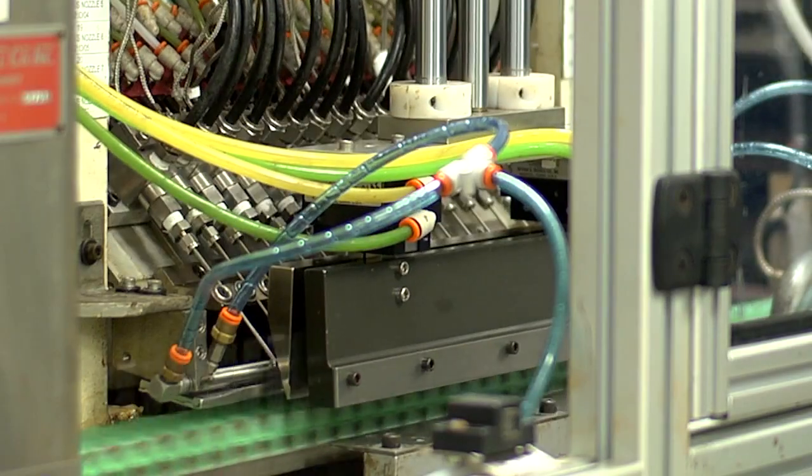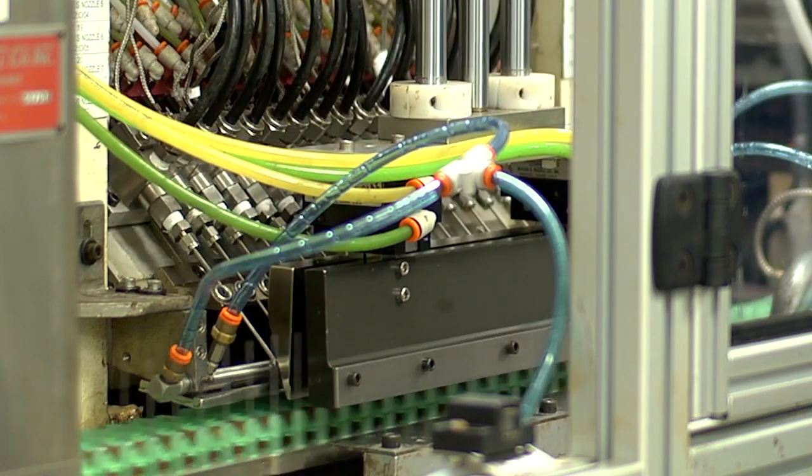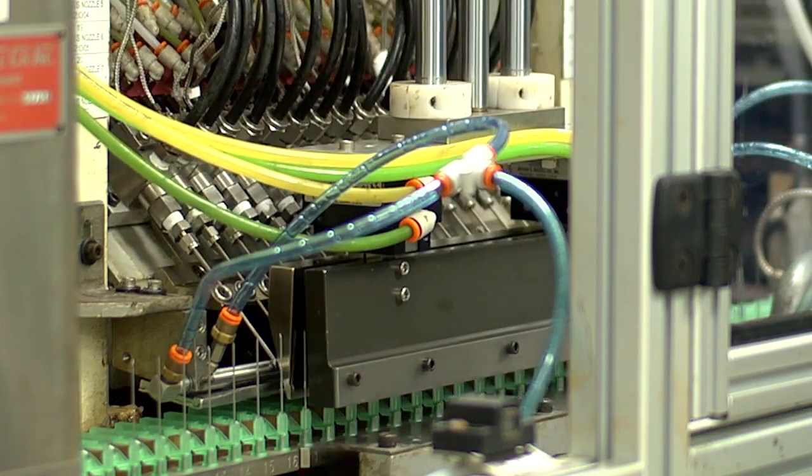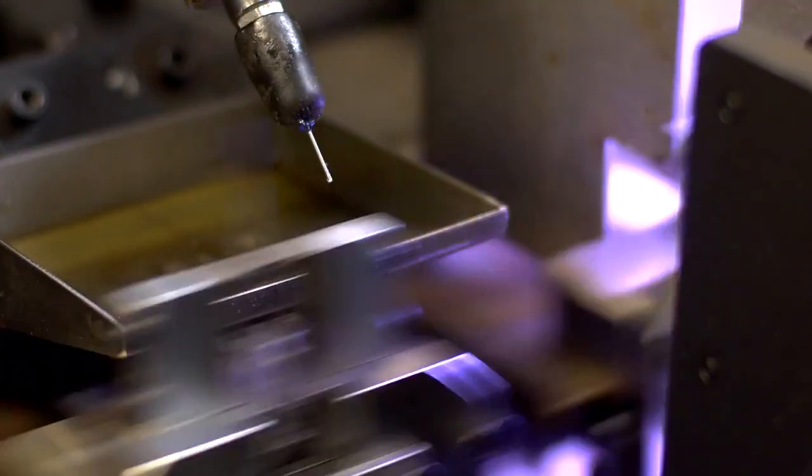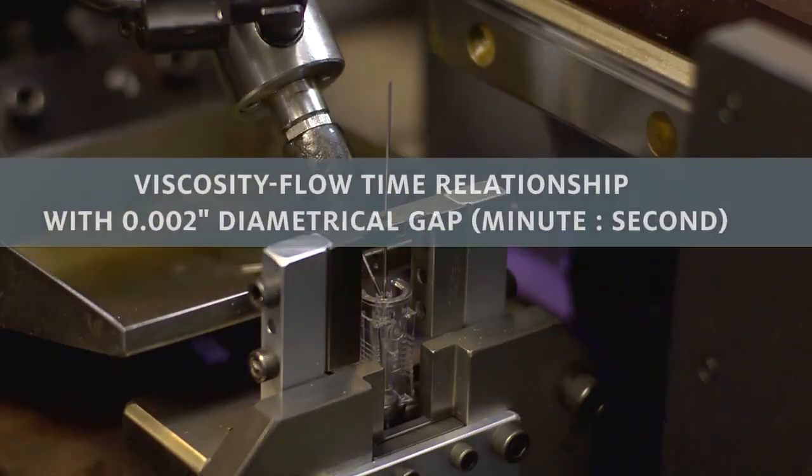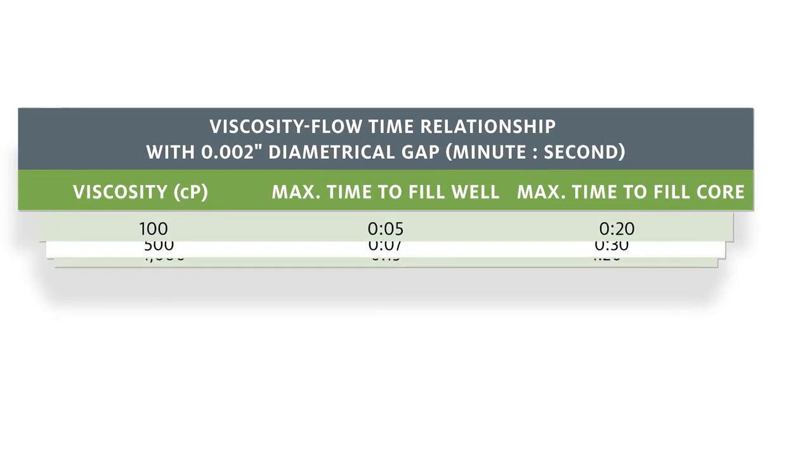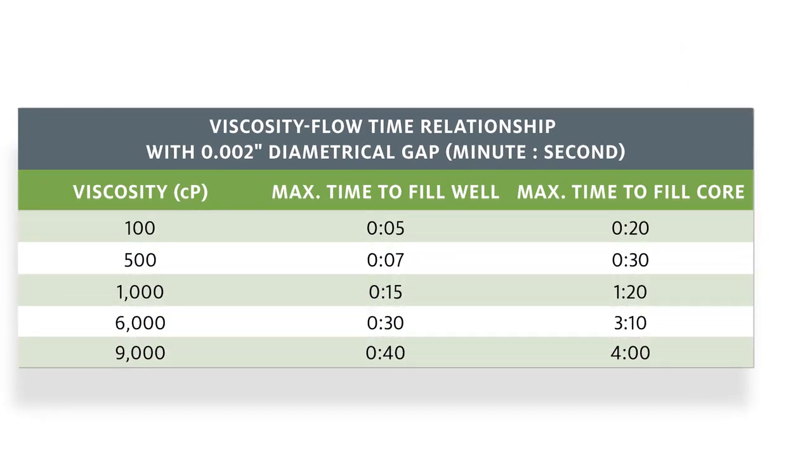Needle manufacturers may dispense adhesive on the cannula before it is inserted in the hub or into the well after the cannula is inserted in the hub. A pre- or post-application process dictates the recommended adhesive viscosity.